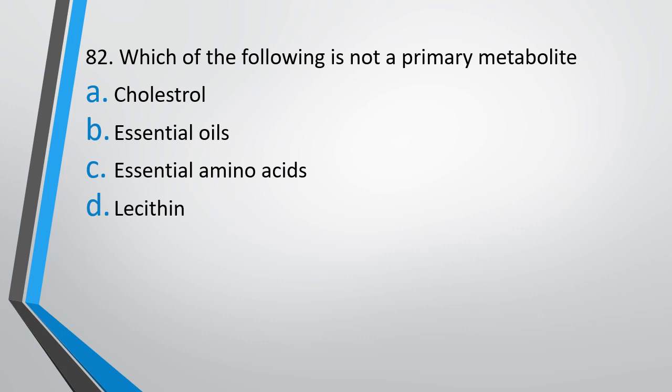Which of the following is not a primary metabolite? Option A: Cholesterol. Option B: Essential oils. Option C: Essential amino acids. Option D: Lecithin. The correct answer is option B — Essential oils. For example, lemongrass oil is not a primary metabolite; it is a secondary metabolite which is produced in plants.